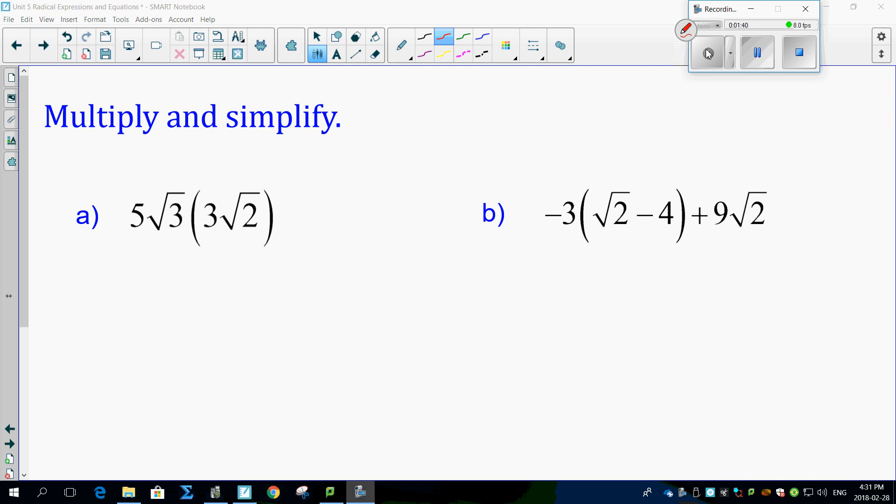So you look at this. Look. Numbers times numbers. 5 times 3. Not tough. 15. Radicals times radicals. Root 3 times root 2. Root 6. That's it. I think that's the easiest thing you've done so far. Holy smokes. That's incredibly easy.